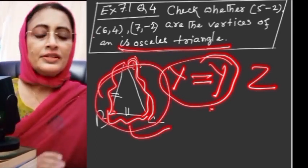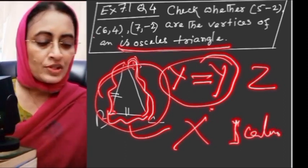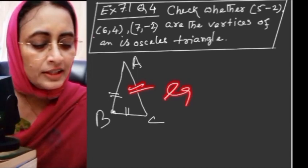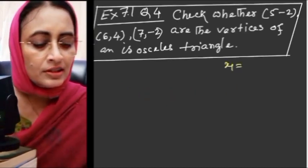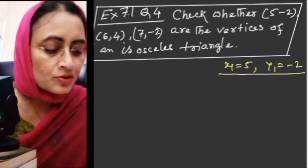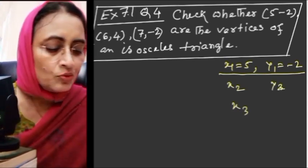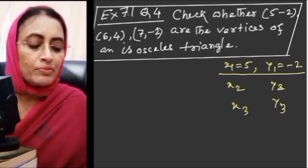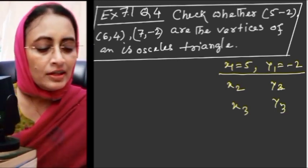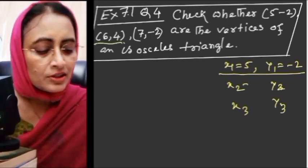So let's start. We will find three distances. For convenience, let us write the coordinates: x1, y1 for the first point, x2, y2 for the second point, and x3, y3 for the third point.